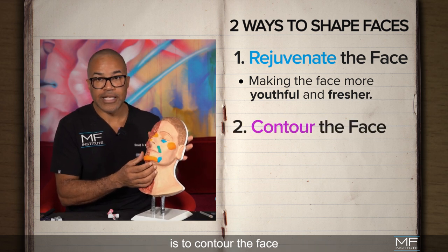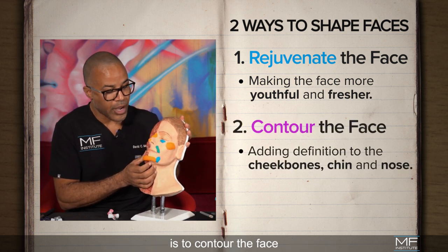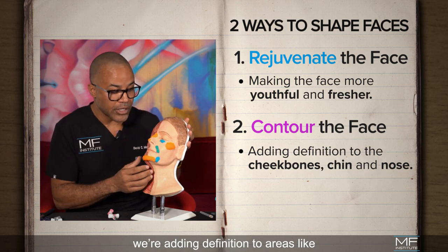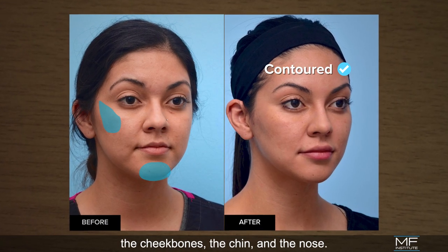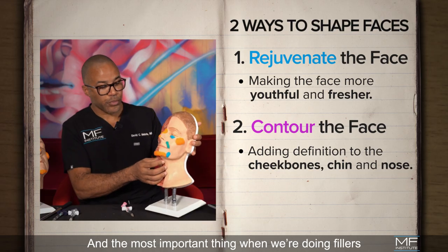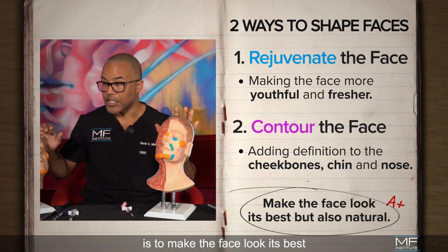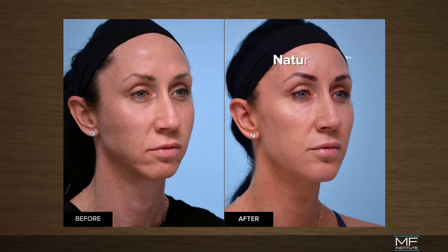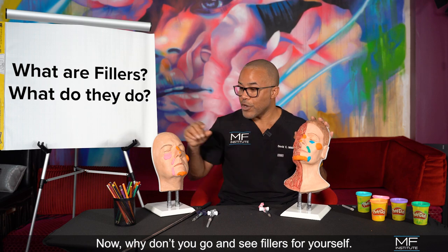The second thing we can do with fillers is contour the face — adding definition to areas like the cheekbones, the chin, and the nose. The most important thing when doing fillers is to make the face look its best while making sure it looks natural.